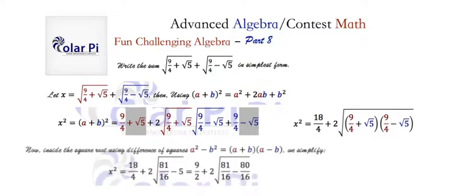If we do that, then x squared is going to be 18 over 4 plus 2 times 81 over 16 minus 5. Getting a common denominator inside the square root will mean that we write the minus 5 as minus 80 over 16. Then inside the square root we're going to get 1 divided by 16, and the square root of 1 over 16 is 1 over 4, so 2 times 1 over 4 is 1 half. So we have 9 halves plus 1 half.